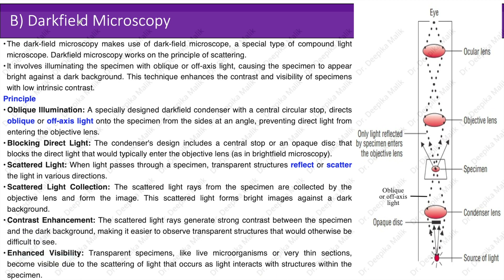Dark field microscopy makes use of a dark field microscope, a special type of compound light microscope. It works on the principle of scattering, involving illuminating the specimen with oblique or off-axis light, causing the specimen to appear bright against a dark background. This technique enhances the contrast and visibility of specimens with low intrinsic contrast.